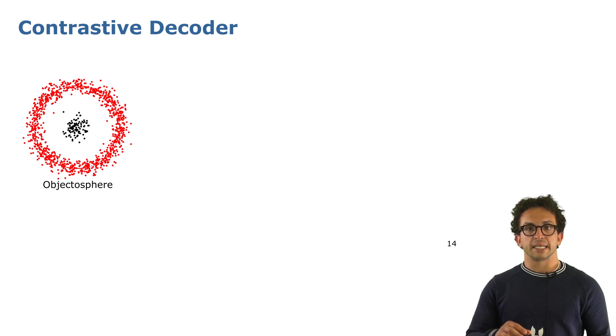This tries to place the norms of the feature of pixels belonging to the known classes on the circle, and the norms of the feature of pixels belonging to unknown class at the center, close to zero.